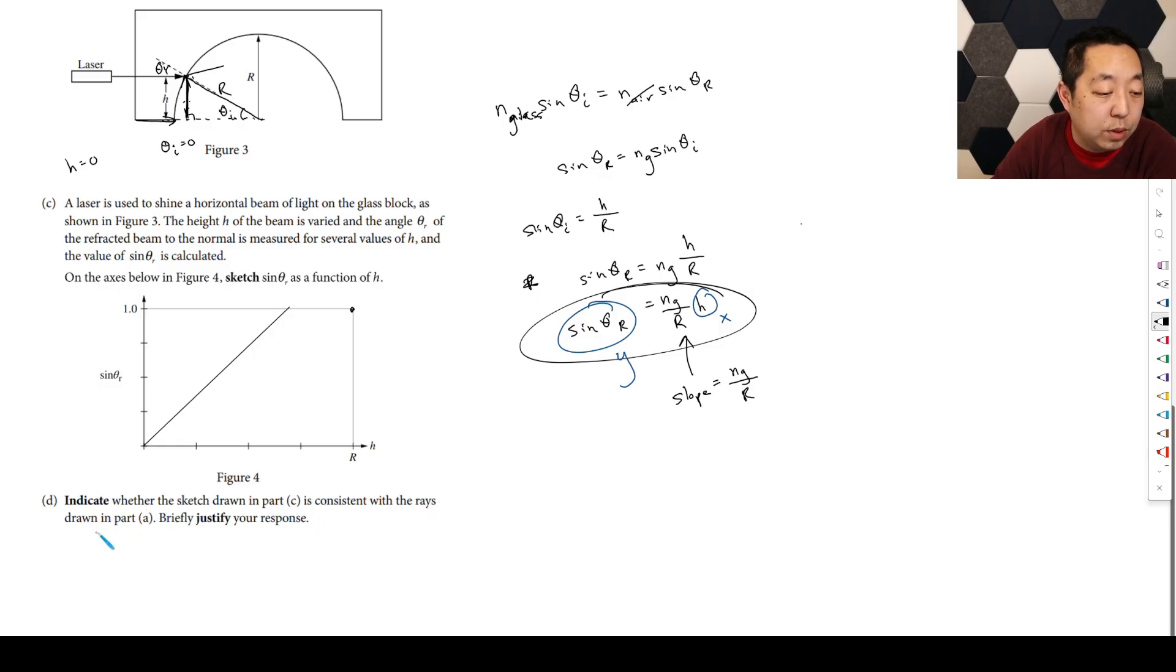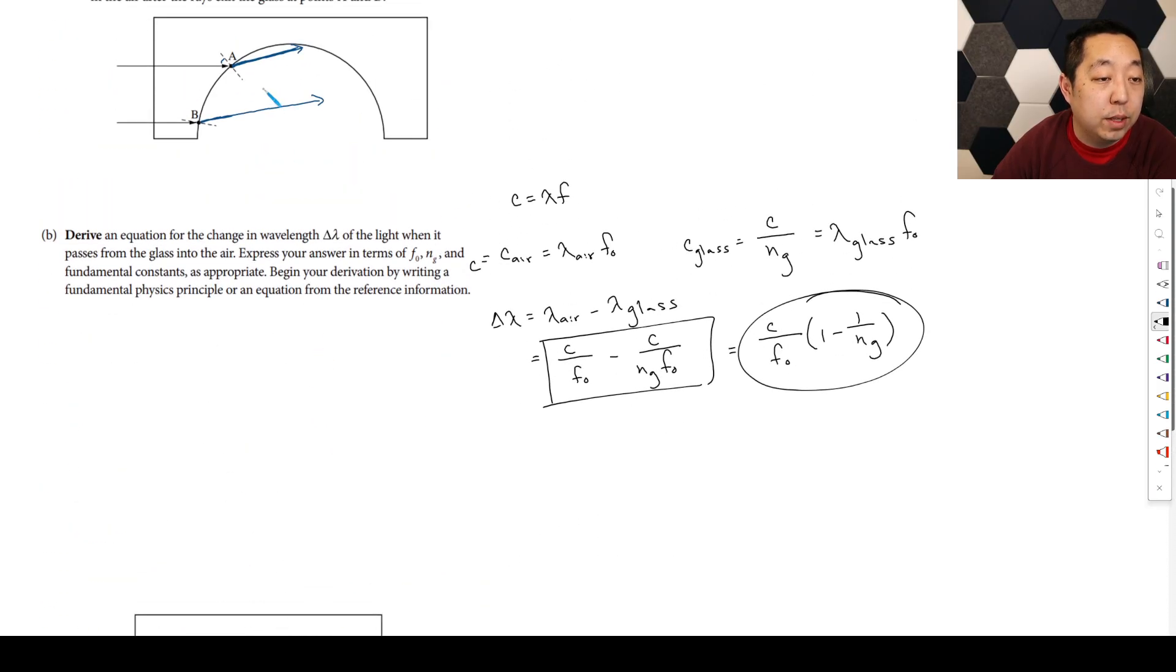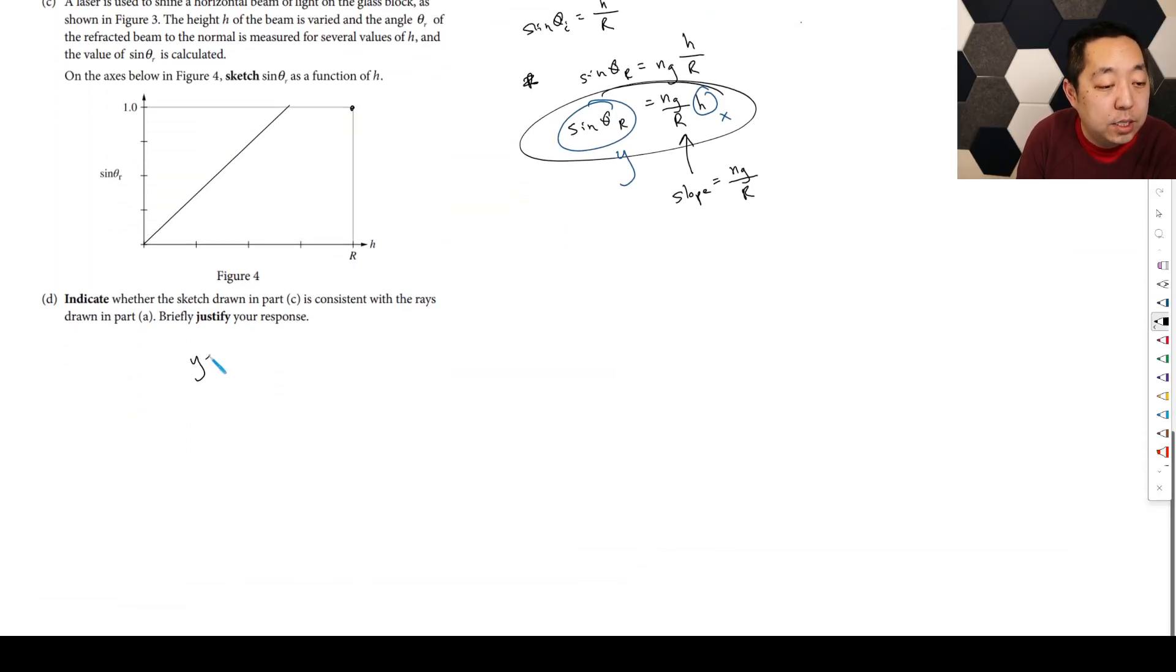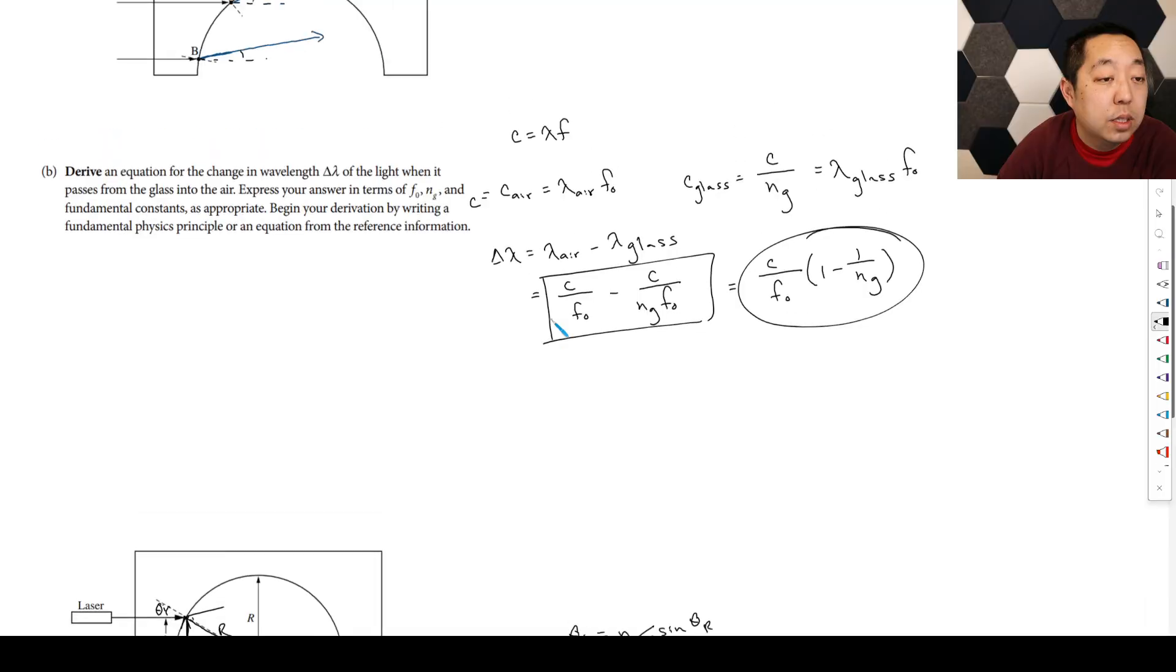Indicate whether the sketch drawn in part C is consistent with the rays drawn in part A and briefly justify it. That's the fourth part. Fourth part can be whether or not it might compare against the two. So in this case they want you to compare whether or not the angles are steeper. And so if you look at this angle to the horizontal, the angle is greater there at a higher height.